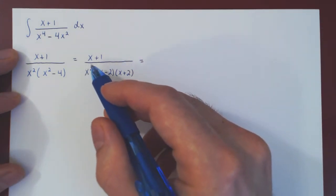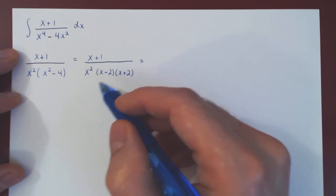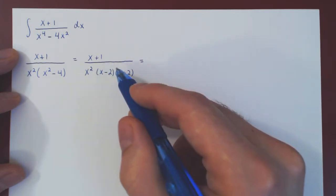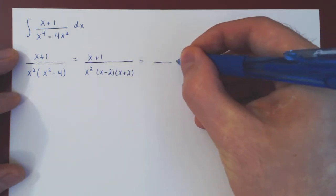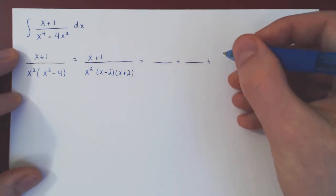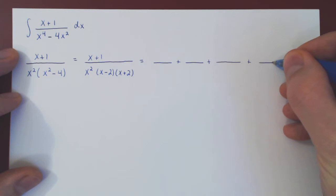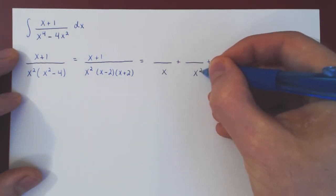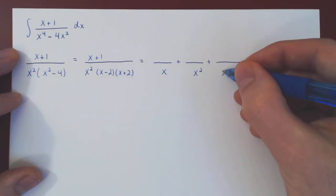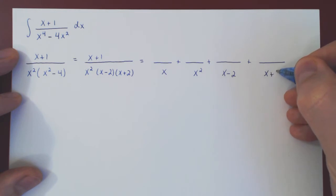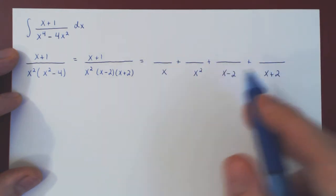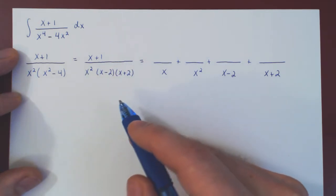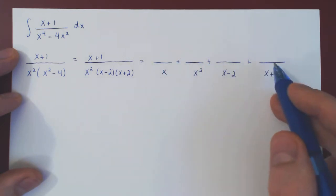We will have two partial fractions coming from the x squared term, one from x minus 2, and one from the x plus 2 term — so four partial fractions in total. For x we go from x to x squared, and for x minus 2 and x plus 2, one fraction over each factor. Since each factor x, x minus 2, and x plus 2 is linear, each numerator will be a single constant.